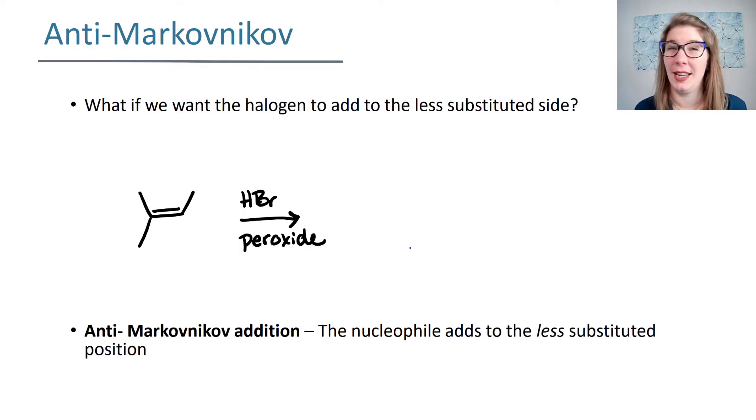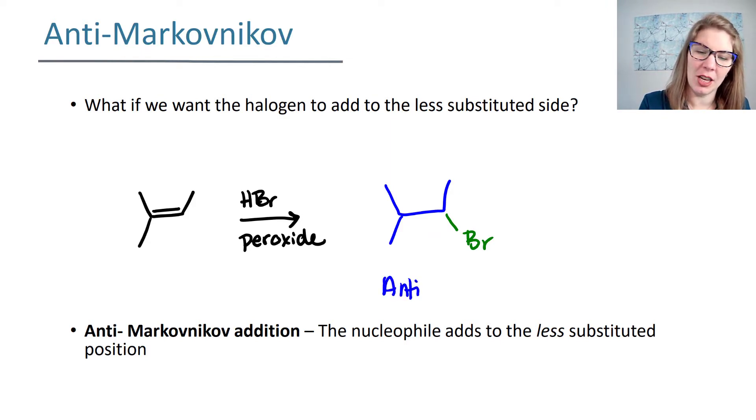But what if you wanted the bromine to go to the less substituted position? What would you do? Well, you can actually force it, and we're not going to look at the mechanism for this until we talk about radicals. But if we added peroxide to our solution, then what will happen is we will get bromine added to the less substituted side, and we call that the anti-Markovnikov addition, and this is the anti-Markovnikov product.